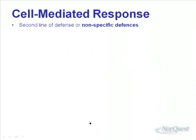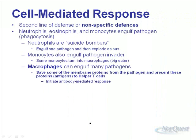The cell-mediated response is our second line of defense — the nonspecific defense. It's the neutrophils, eosinophils, and monocytes engulfing a foreign pathogen. Neutrophils are like suicide bombers — they engulf one pathogen and explode as pus, releasing a bunch of digestive enzymes to break that pathogen up. Monocytes can also engulf foreign invaders, and some of them turn into macrophages. Macrophages are special — they save the membrane proteins from a pathogen.